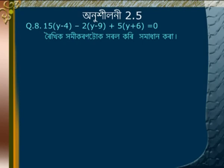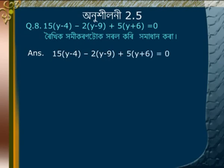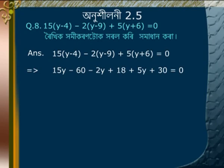Problem 8: Solve 15(y minus 4) minus 2(y minus 9) plus 5(y plus 6) is equal to 0. Expanding brackets: 15y minus 60 minus 2y plus 18 plus 5y plus 30 is equal to 0.